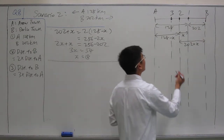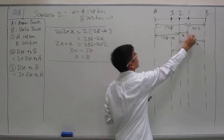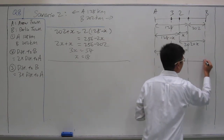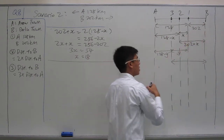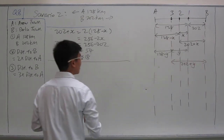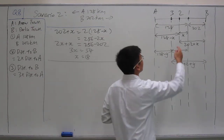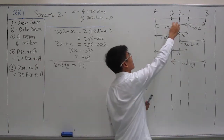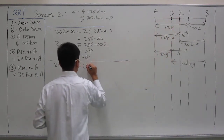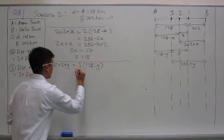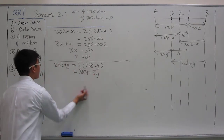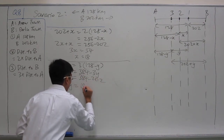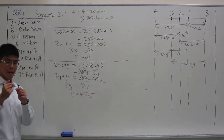For the third signpost, we introduce y as the distance from the first signpost to the third signpost. Then the third signpost to A is 128 minus y, and to B is 202 plus y. Distance to B equals 3 times distance to A: 202 plus y equals 3 times 128 minus y. We expand the bracket, bring all y's to the left and numbers to the right, simplify further, and get y equals 45.5.